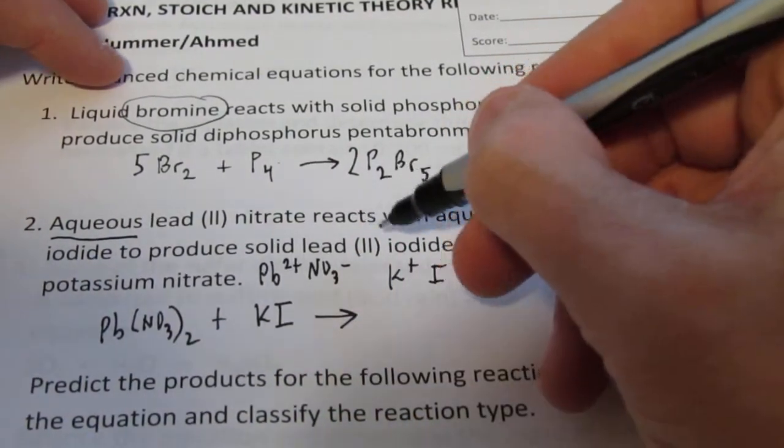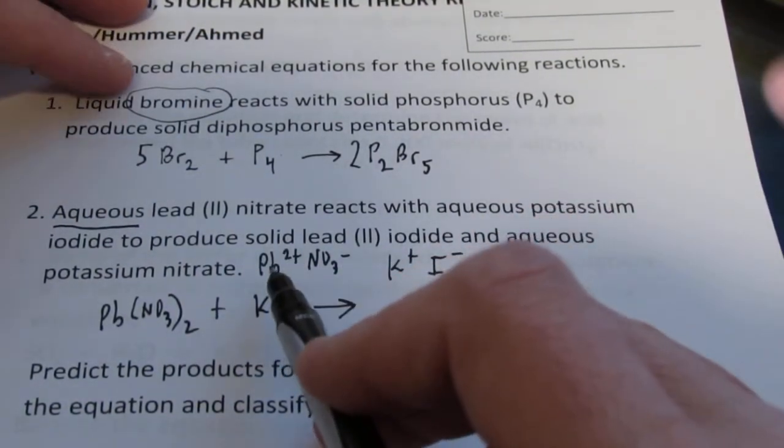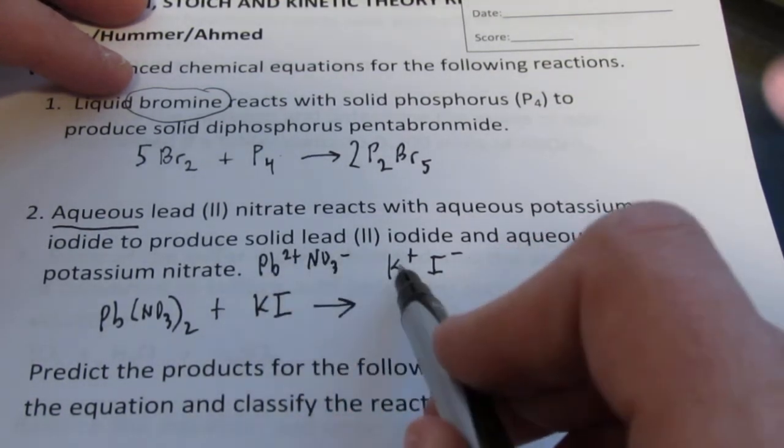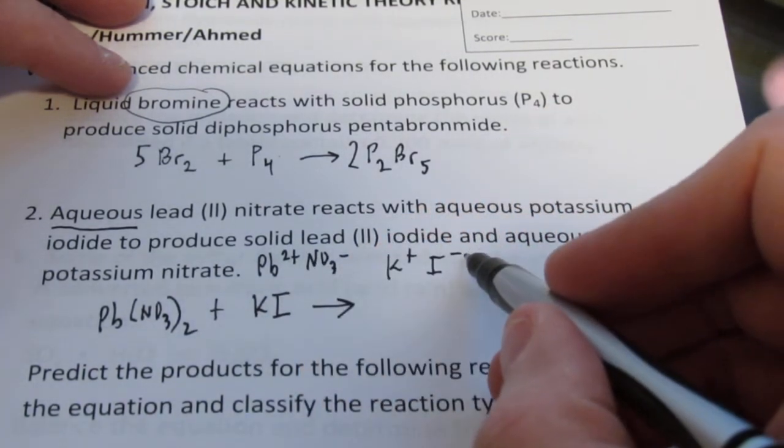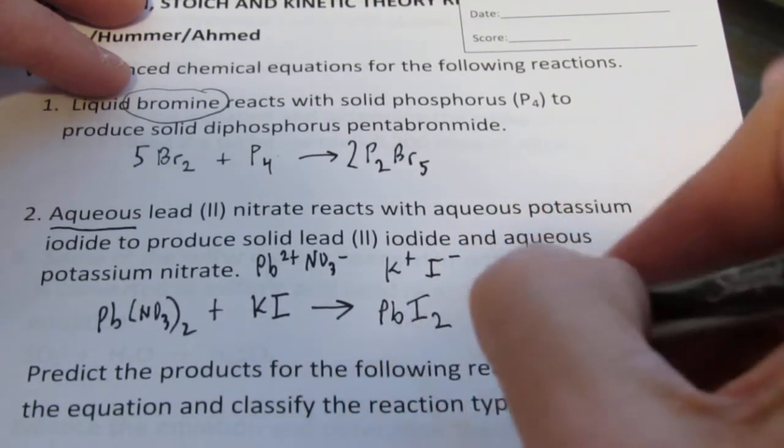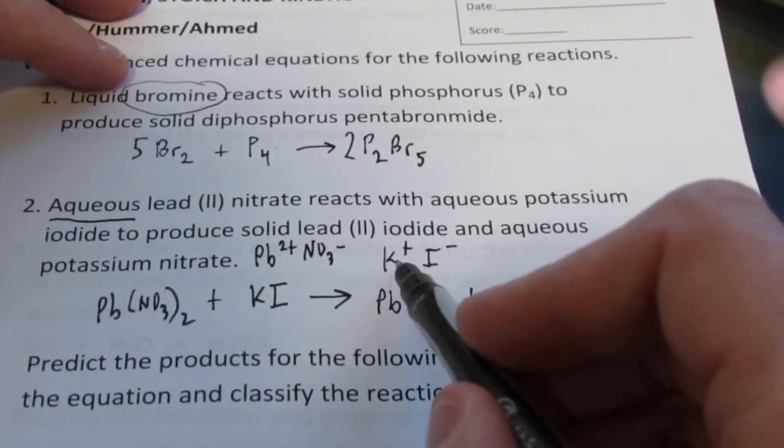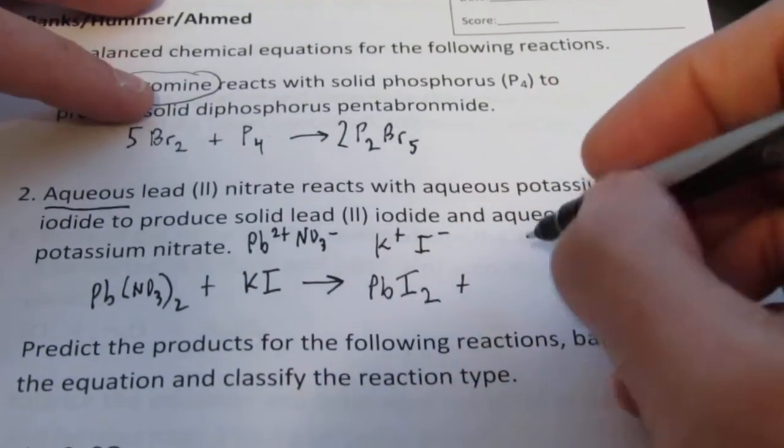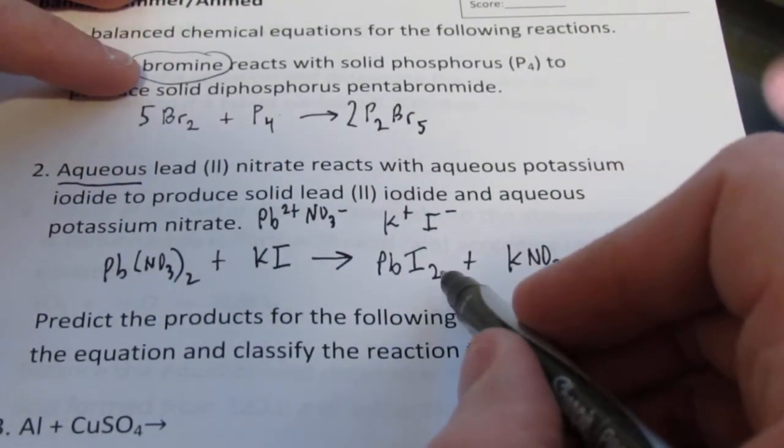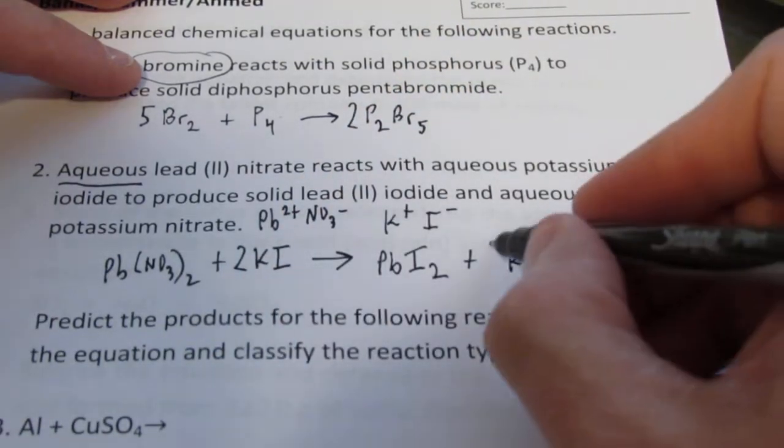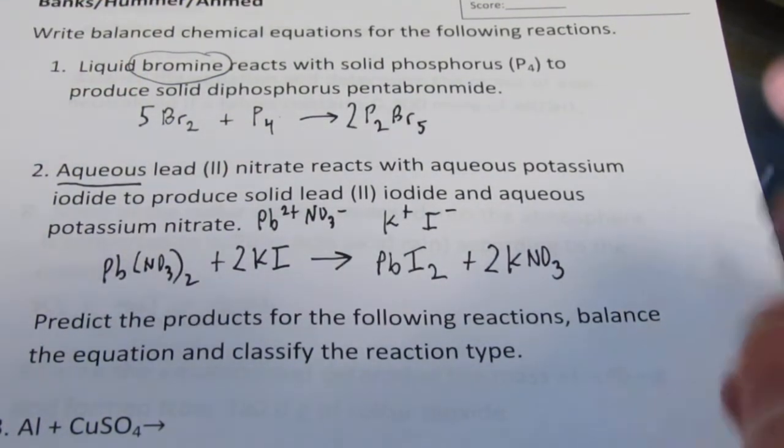This is a double displacement reaction where lead and potassium switch partners. Lead gets together with iodide to form PbI2, and potassium gets together with nitrate to form KNO3. Balancing: Pb(NO3)2 + 2KI → PbI2 + 2KNO3.